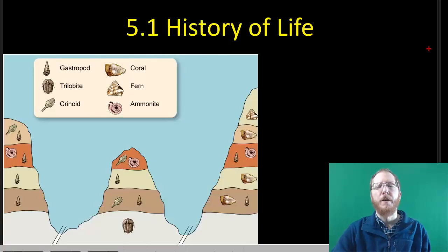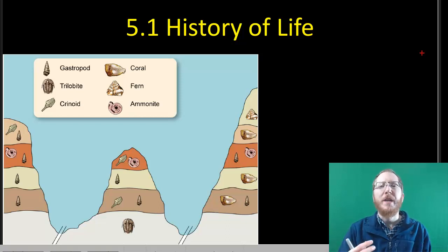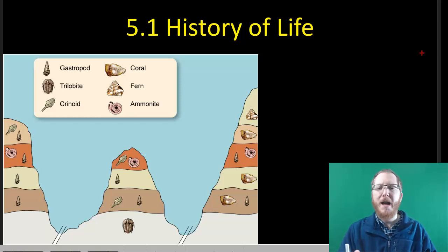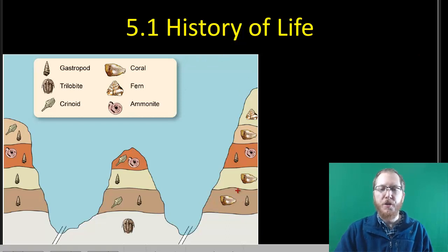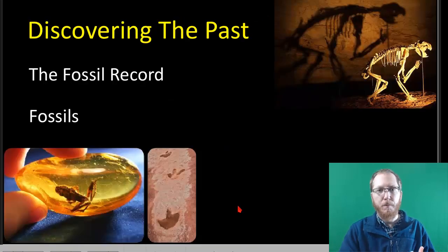Welcome to section 5.1, History of Life. In this section we're going to look back at what we know and how we know about the organisms that have lived on this planet, about the planet itself and how long it's been around. We're going to do that by literally digging through the earth and analyzing what we find, which gives us a piece of how things have worked throughout time.